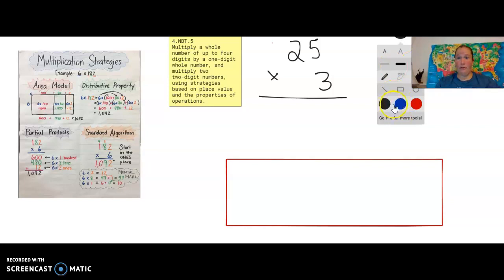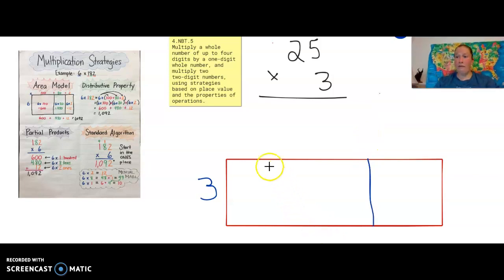So I'm going to get my color here. So let's start. Remember, we're going to say our width is 3. And we're going to decompose that 25. So if we break apart 25, we know it's the same thing as two tens, 20, and five ones, 5.